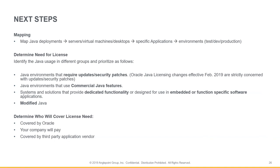Next, we would look at Java environments that use commercial Java features. Companies may not have had these licensed because the installer packages were most likely available and weren't known to be licensable — but they always have been. We would begin taking that mapping for all the commercial features and commercial executables and start planning budget there. Then, systems and solutions that provide dedicated functionality or are designed for embedded or function-specific software applications — homegrown applications, ATMs, handheld scanners — these have always been licensable.